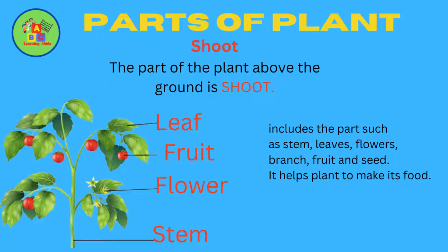The part of the plant above the ground is shoot. It includes parts such as stem, leaves, flowers, branch, fruit and seed. It helps the plant to make its food.